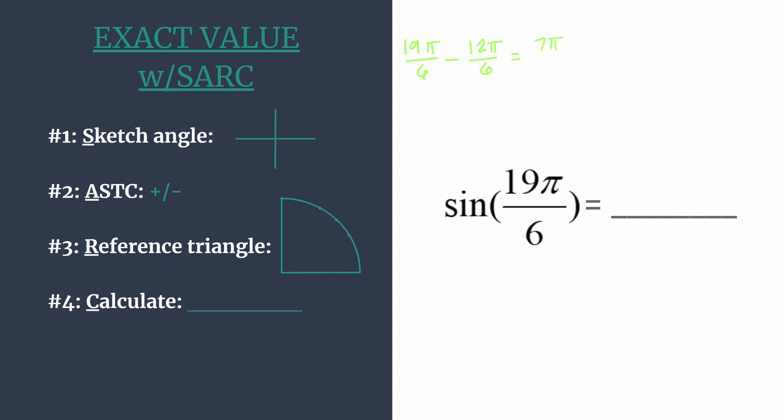And so we find that 7π over 6 is coterminal to 19π over 6. And all that means is they share the same terminal side, and we just rotate differently to get to each one.